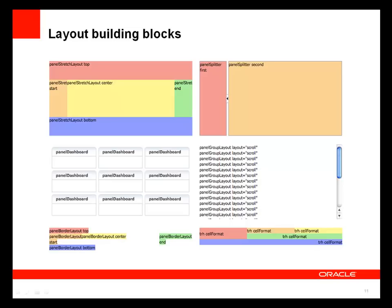The panel splitter is a stretched box divided into two sections that are user-modifiable — the user can define the amount of real estate for either the first or second panel. We call these first and second panels instead of left and right because in a bi-directional format, right can mean something different, and the panel splitter might be displayed horizontally, dividing the page between top and bottom. The panel dashboard gives you a stretched tiled structure of boxes, providing a nice way to display multiple objects in a tiled manner.